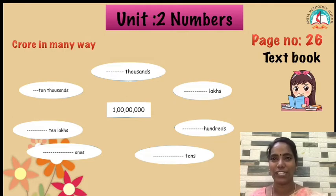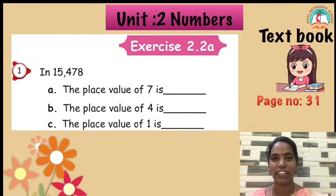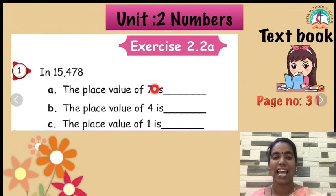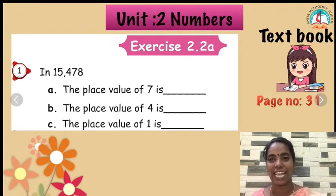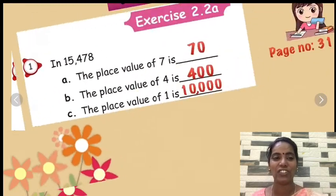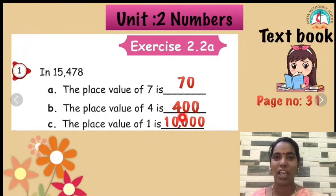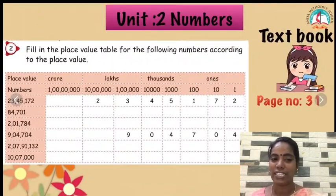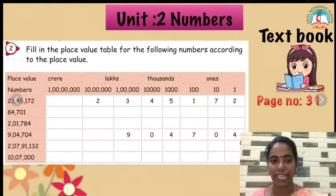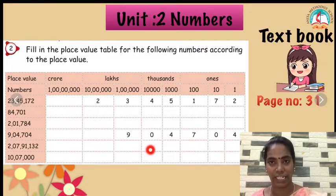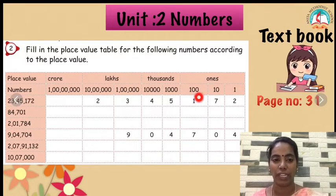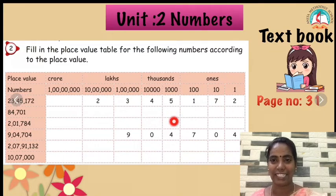Exercise 2.8. Children, now we are going to finish this. A — place value: 7 in the 10s place and 4 in the 100s place and 1 in the 10,000 place. Check these answers, children. Then we have to do the next one — fill in the boxes. Now we are going to see these numbers and write in the correct place, whether it is the 1s, 10s, or 100s place. You have to check the answers now.